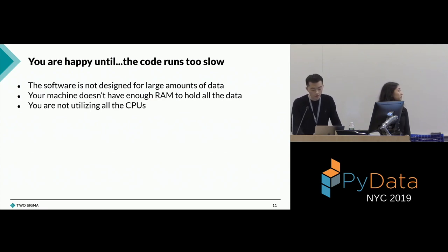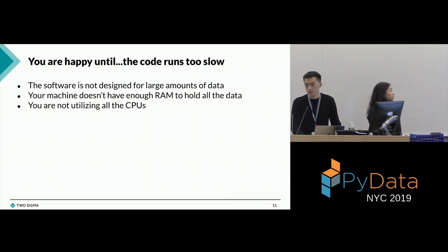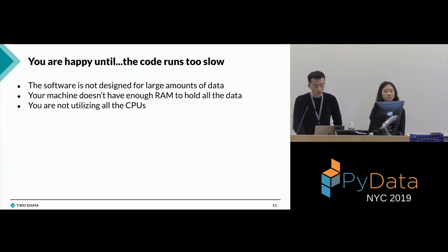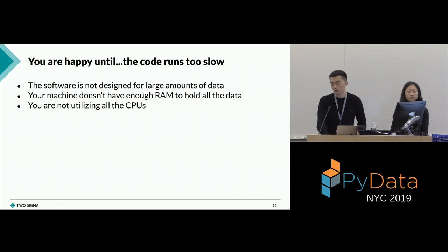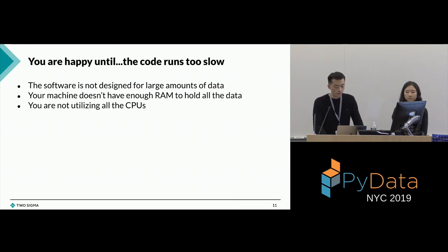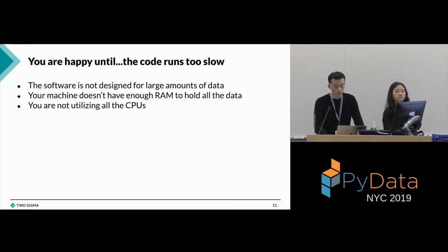This code is pretty straightforward. We all write code like this with pandas. We all like it. However, we're not so happy when the code runs too slow. Why does the code run too slow? It can be a lot of reasons. For example, pandas is not really designed for large amounts of data. It could also be that your machine doesn't have enough memory. Pandas is mostly an in-memory library that doesn't deal with on-disk data that well. And maybe you're not utilizing all the CPUs — pandas is mostly a single-threaded library for the most part. And these days, even your laptop has a lot of cores that are not being utilized.